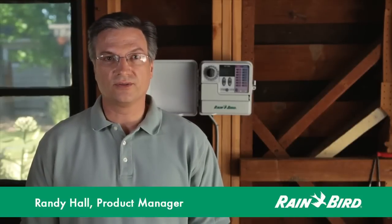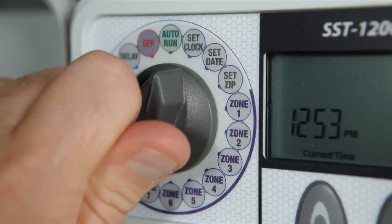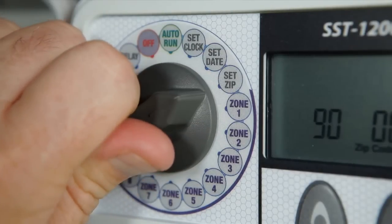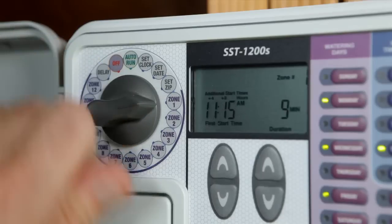Programming a Rainbird SSC smart controller is easy. We're about to see step by step how its simple design lets you set the time, the date, and the location of your home. Then we'll see how you set a custom tailored watering schedule for each zone.